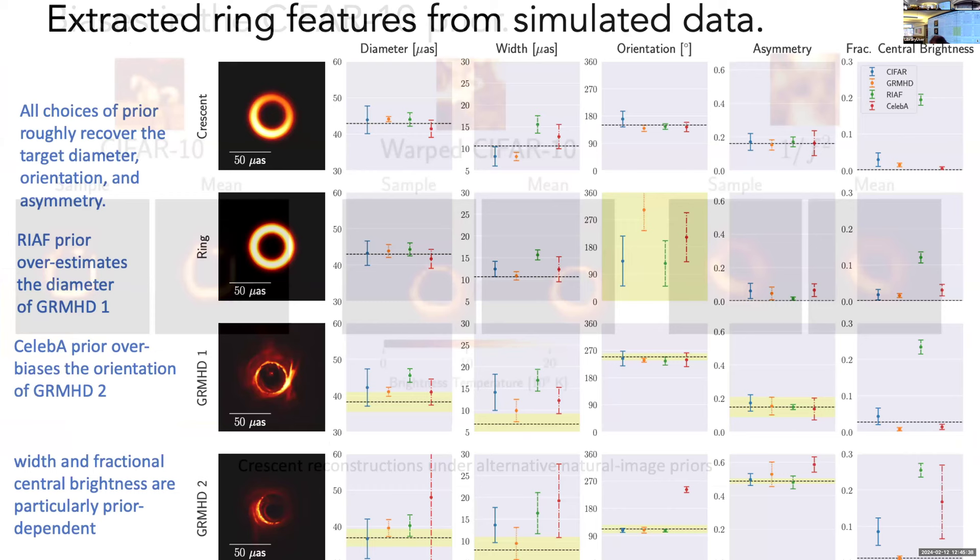Then, let's try to analyze features from the simulated data. Okay, we're still in simulations. For the simulated signals, all the choices of the prior roughly recover the target diameter or reticent asymmetry. This RIAF prior overestimates the diameter of a GRNHD signal. Let's move on to real data.